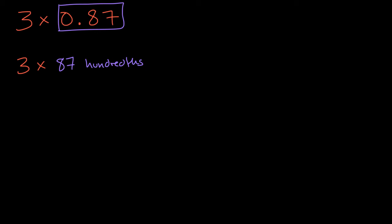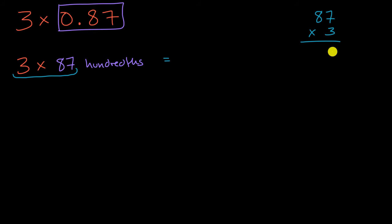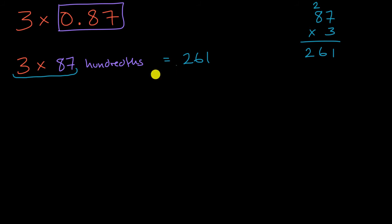If I have three times 87 of something, I'm going to be left with some number of hundredths. To figure that out, we just need to compute three times 87. Seven times three is 21 — regroup that two. Eight times three is 24, and with the regrouped two that's 26, giving us 261. So three times 87-hundredths is 261-hundredths.